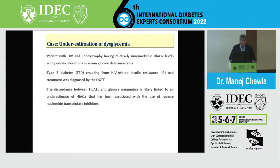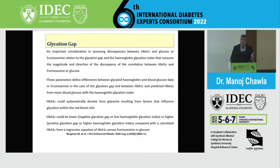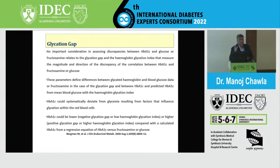Underestimation of dysglycemia can also occur. Patients with HIV or lipodystrophies may show falsely low HbA1C. Type 2 diabetes may result from HIV-related insulin resistance, and in HIV-positive individuals, the false low A1C could be associated with use of antiretroviral drugs such as reverse nucleoside transcriptase inhibitors. Additionally, the glycation gap concept is relevant — there can be negative or positive glycation gaps in the human body, either way impacting HbA1C.